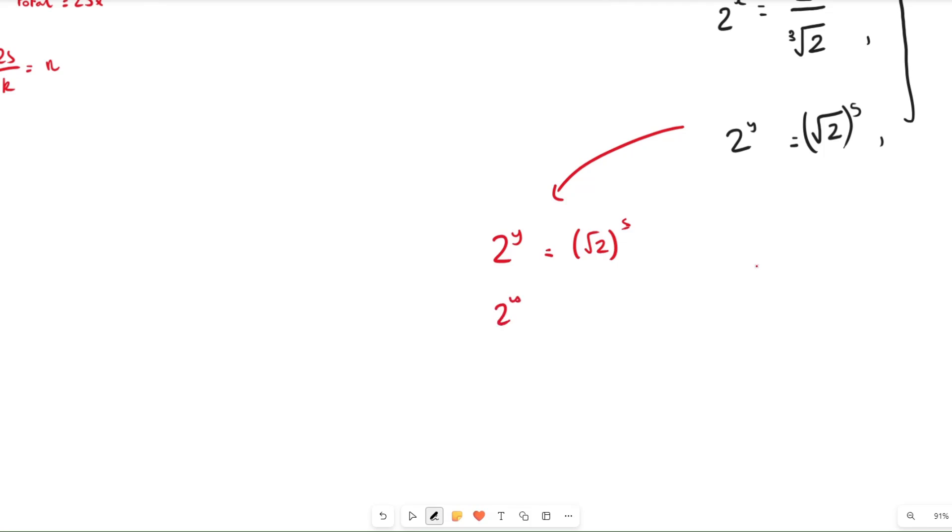So we can say that 2 to the power of y equals 2 to the power of a half, which is the same as a square root of 2, and we raise that to the power of 5. Now when we have brackets and indices like this, we should multiply the indices like so.